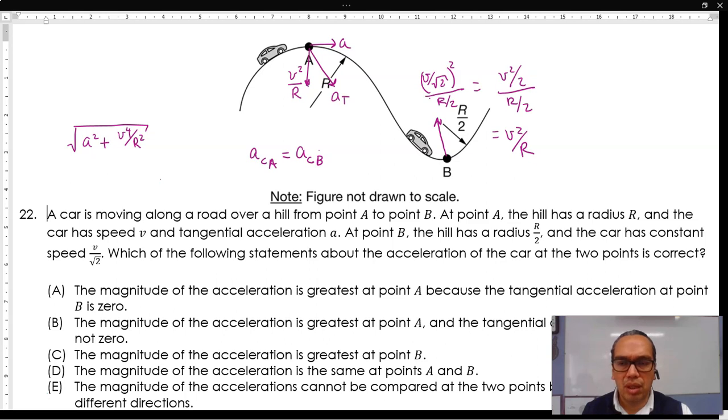So for part A, the magnitude of the acceleration is greatest at point A because the tangential acceleration at point B is zero. That is correct. B states that the tangential acceleration at point B is not zero, that's incorrect. C, the magnitude of the acceleration is greatest at point B, false.